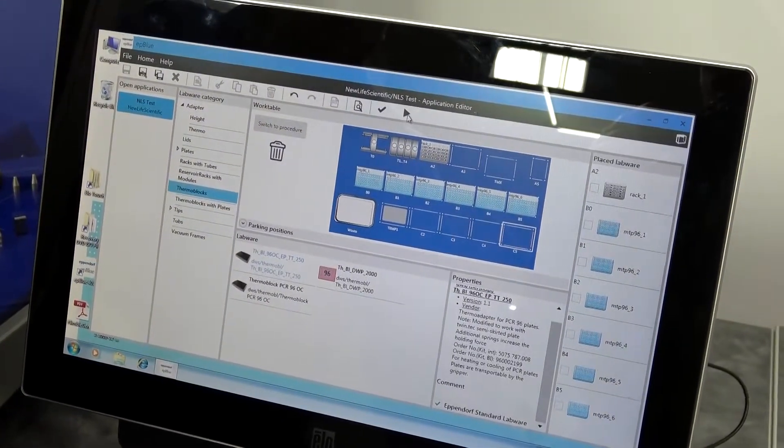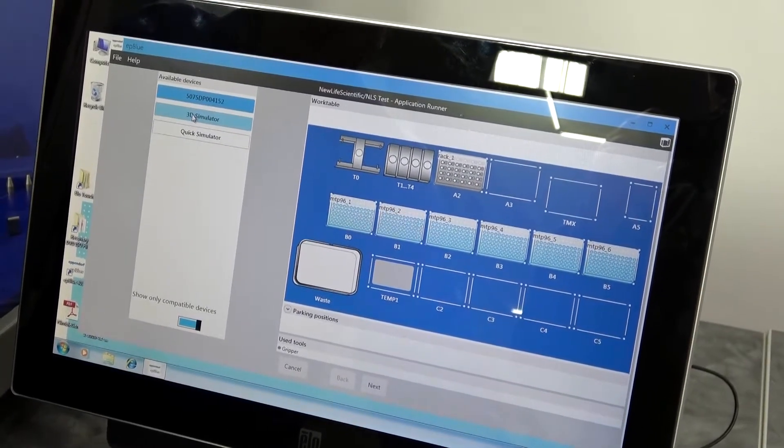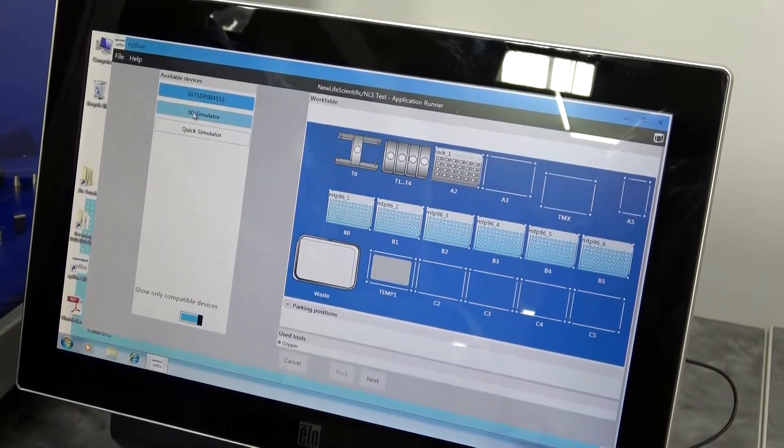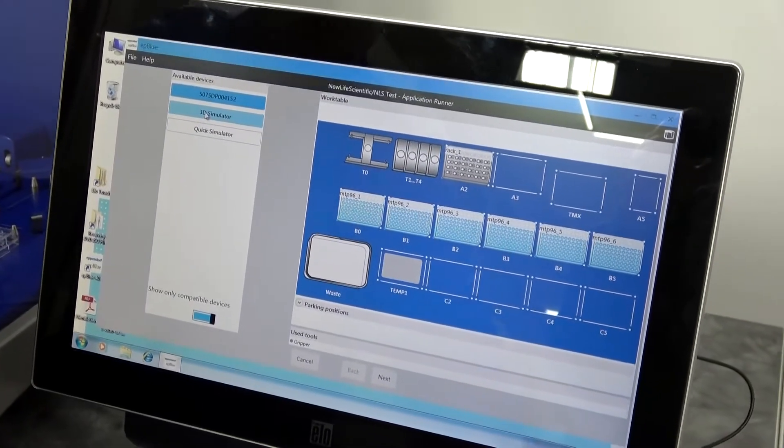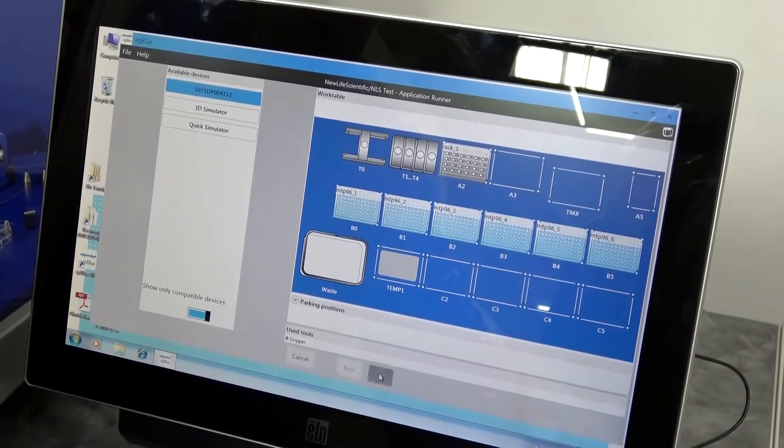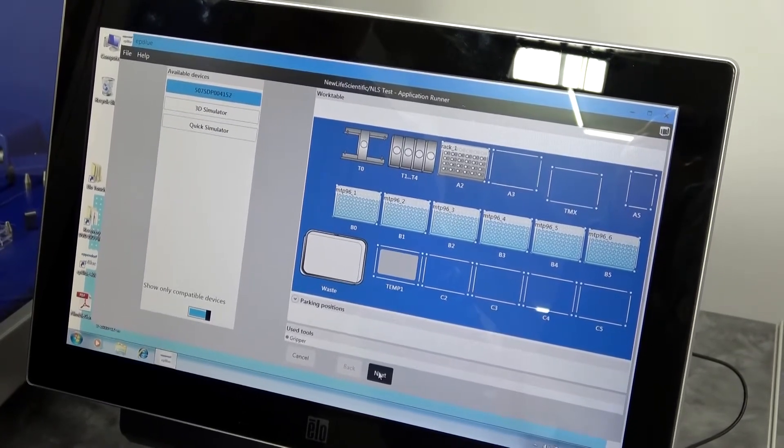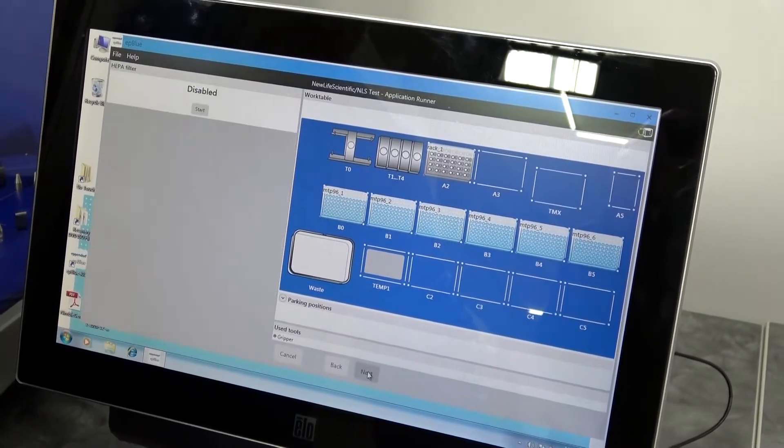When we're ready to run, you can tell it to pull up the run module. It does have a 3D simulator mode, which will allow you to run and preview the program, make sure there's no surprises in it. We're just going to go ahead and run it. I've run this one. Very simple program, just strictly for moving plates.